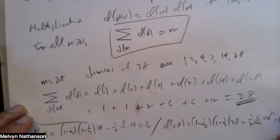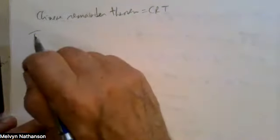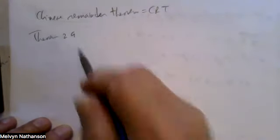So we proved this on Monday, and then we began to discuss the Chinese Remainder Theorem. In its first form, called the CRT — it doesn't mean cathode ray tube, it means Chinese Remainder Theorem — in the text this is theorem 2.9.